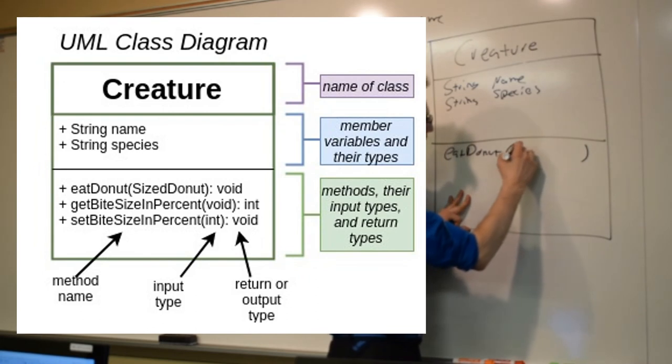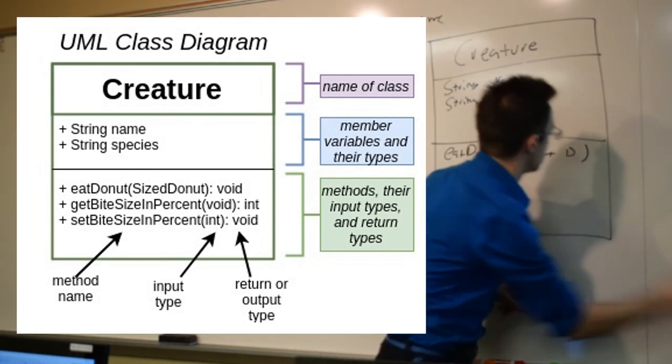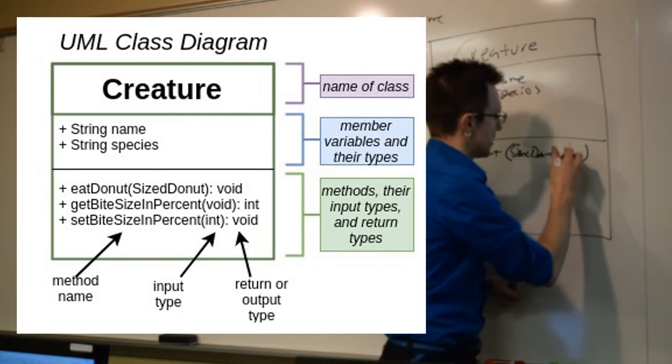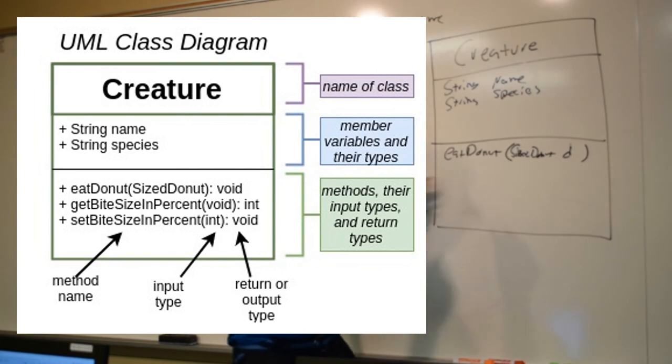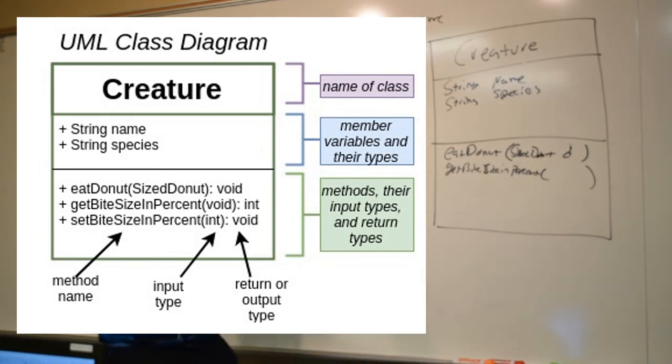And we can name, we can label this input variable anything we want, like d. What else do we have on here? Get bite size in percent. So we would write out these methods. That's the idea of our blueprint class here.